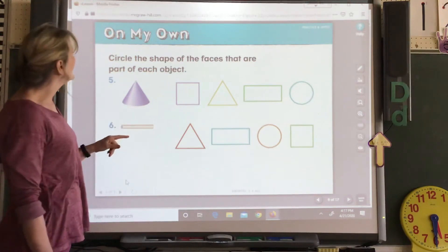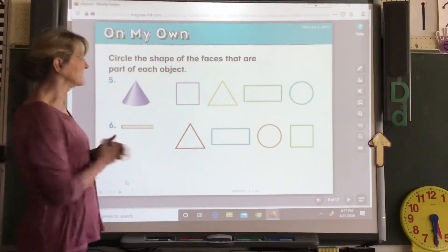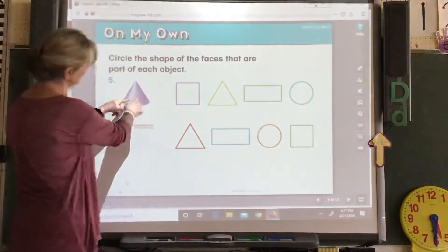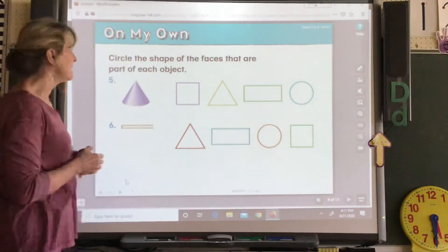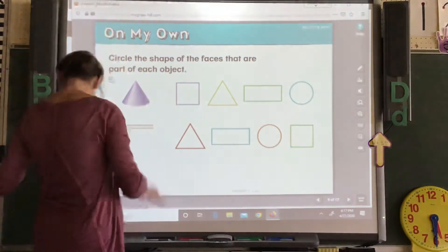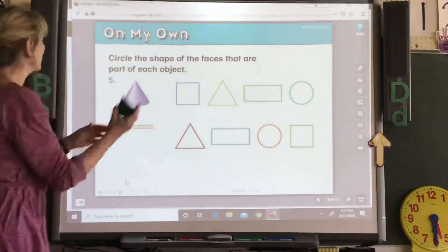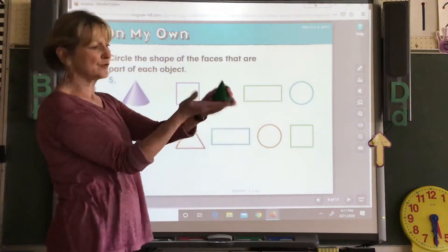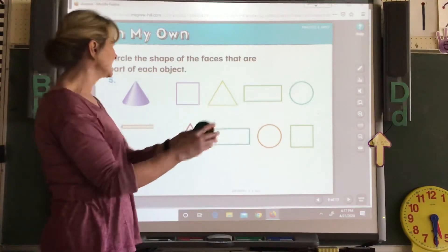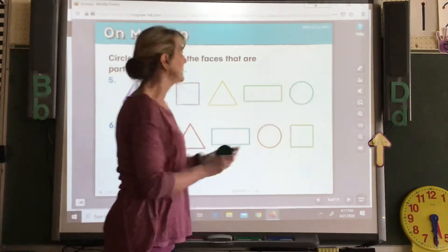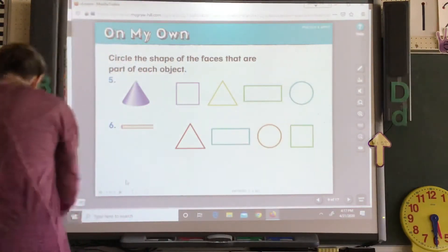Now it wants you to circle the shape of the face. Now this is kind of tricky because this kind of looks like a triangle. But that's, this isn't the face of it. If you look at your cone, here's your face. What shape is the face? Find that shape and circle it.